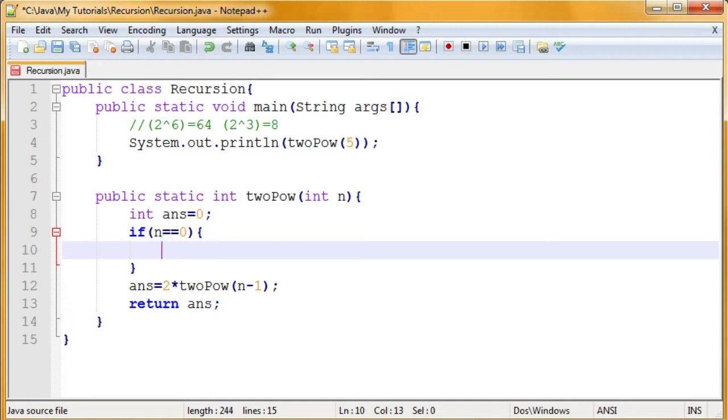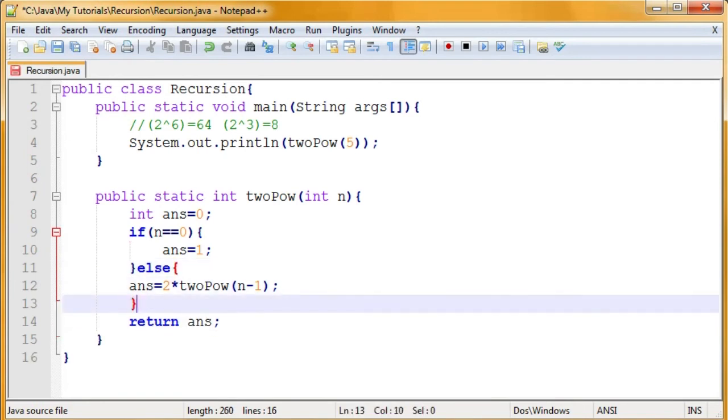So, return... Oh, my bad. We're going to set ans equal to one when we get to zero. And if n is not equal to zero, meaning we have still some ways to go, then we'll do this. So,